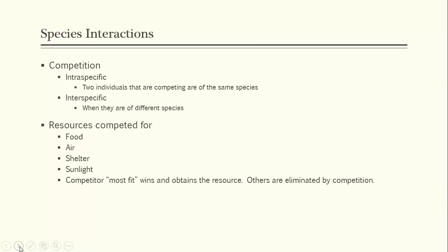No two species can occupy the same niche at the same time. The species that is less fit will eventually relocate, die out, or occupy a smaller niche. When a species occupies a smaller niche than it would in the absence of competition, that compromised niche is called its realized niche. The niche it would have with no competition whatsoever is called its fundamental niche. Direct competition can also be avoided through resource partitioning, which we'll discuss later.